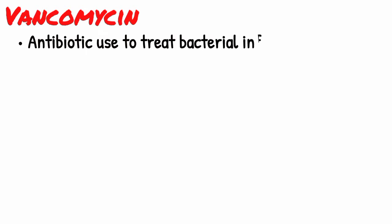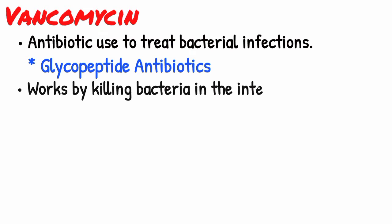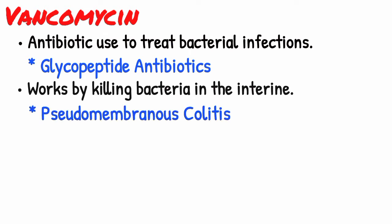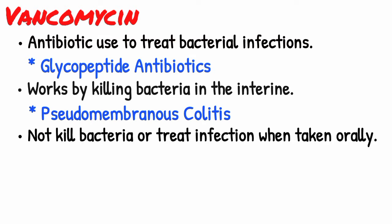Vancomycin is an antibiotic medication used to treat a number of bacterial infections. Vancomycin belongs to the class of medication called glycopeptide antibiotics. It works by killing the bacteria in the intestine, so it is a drug of choice for pseudomembranous colitis disease. Vancomycin will not kill bacteria or treat infection in any other part of the body when taken orally.